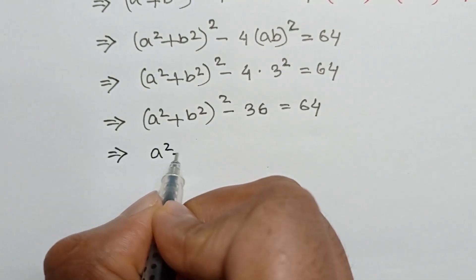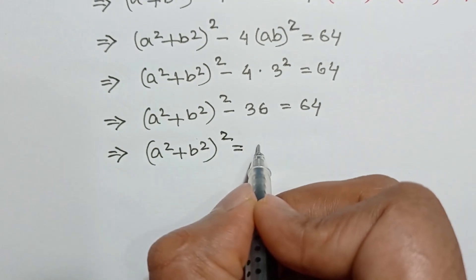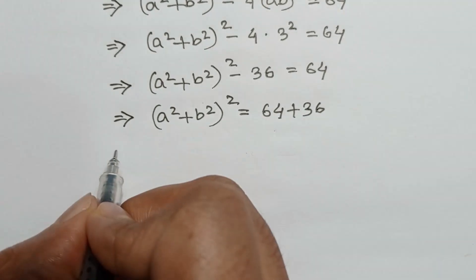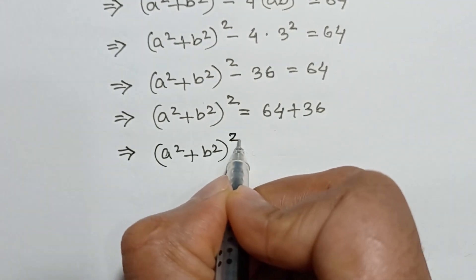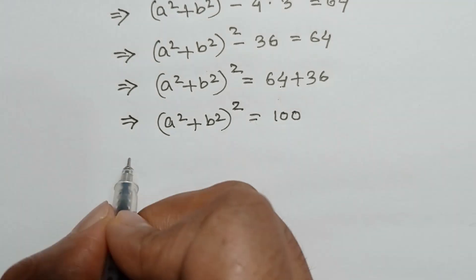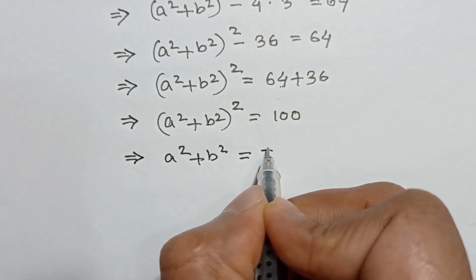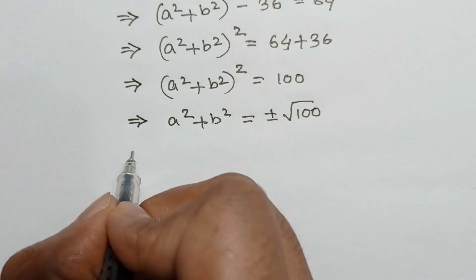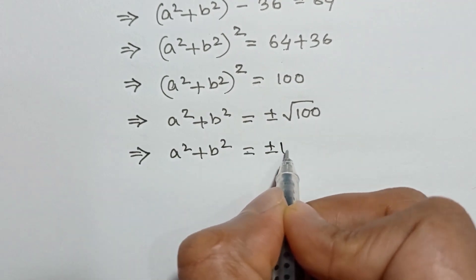Taking 36 to the right side, a squared plus b squared, whole square, is equal to 64 plus 36, which equals 100. Taking square root on both sides, a squared plus b squared is equal to plus or minus square root of 100, which is plus or minus 10.